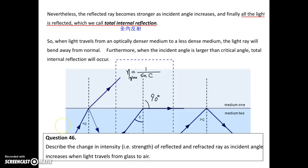This is question 46. It allows you to describe the change in intensity, whether it becomes stronger or weaker for the reflected ray and the refracted ray as well. I think you may find half of the answer from here. The reflected ray becomes stronger as the incident angle increases. On the other hand, for refracted ray, it becomes weaker.